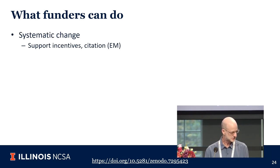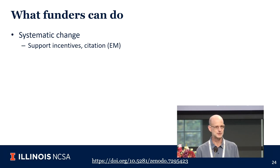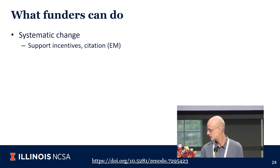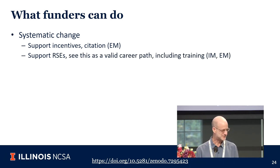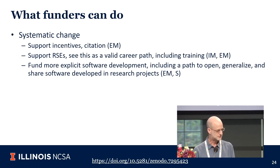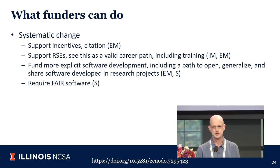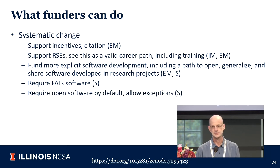Funders can think about systematic changes: supporting incentives and citation — how this is done depends on the individual funder, but it's very important and you should tell the people applying for funding about this. Think about how you support RSEs: are RSEs eligible to apply? Do you have particular calls to encourage institutions to support RSEs? Do you have opportunities for people to be trained as RSEs, maybe as undergraduates? Can you fund more explicit software development, including a path to expand software from individual research projects? Do you require FAIR software or open software as an output of projects?